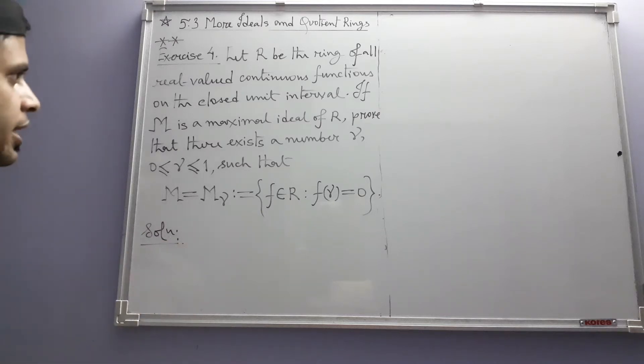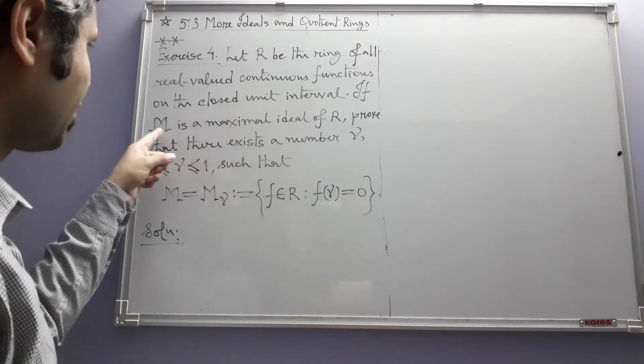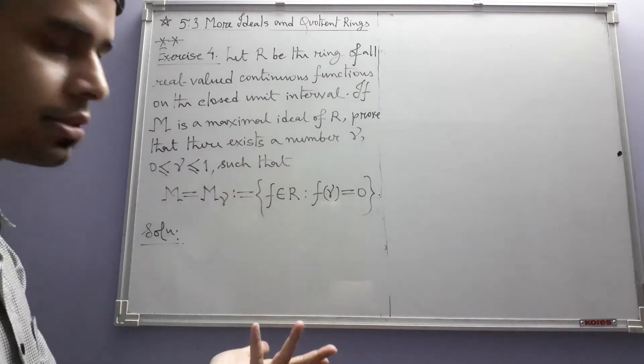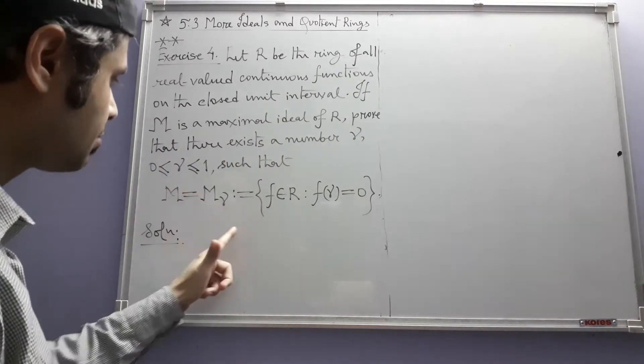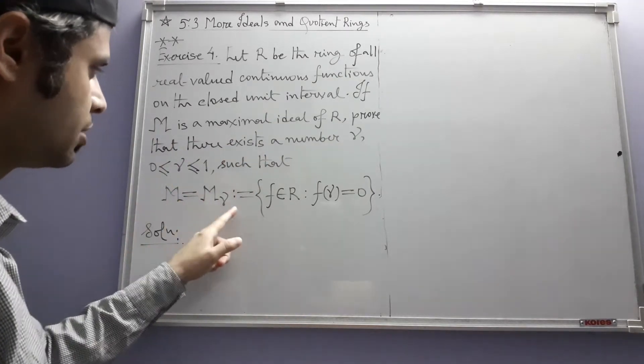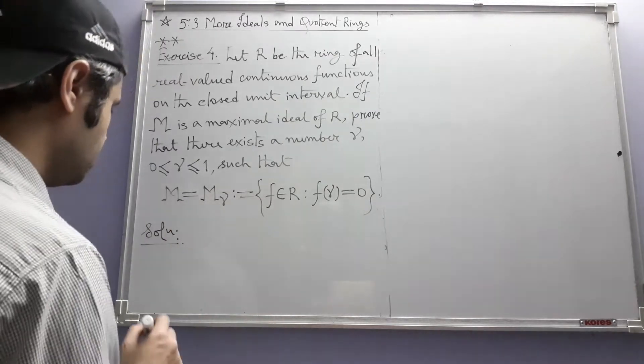We need to prove that for this maximal ideal, which is just any maximal ideal, there is some gamma for which m is equal to this m_gamma.